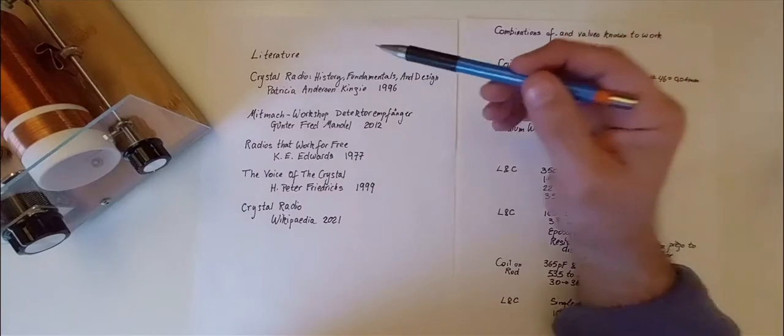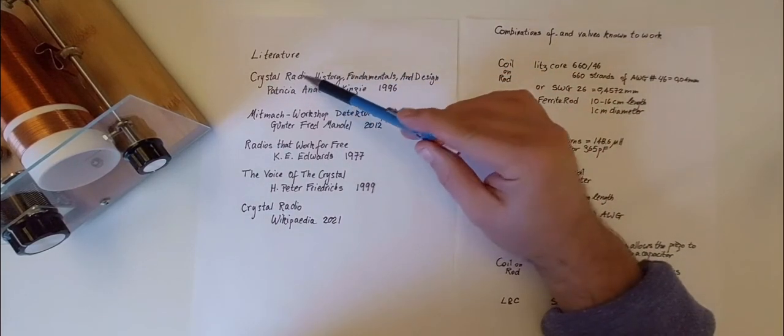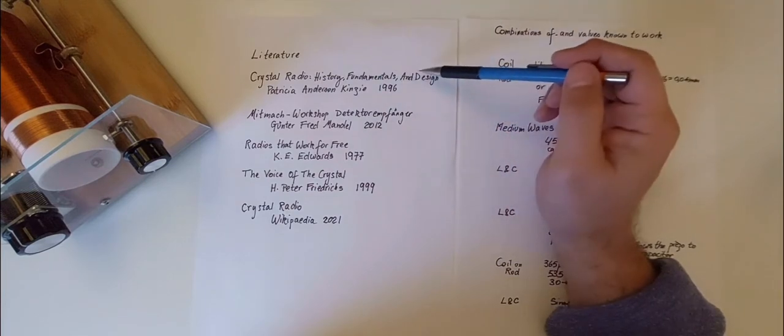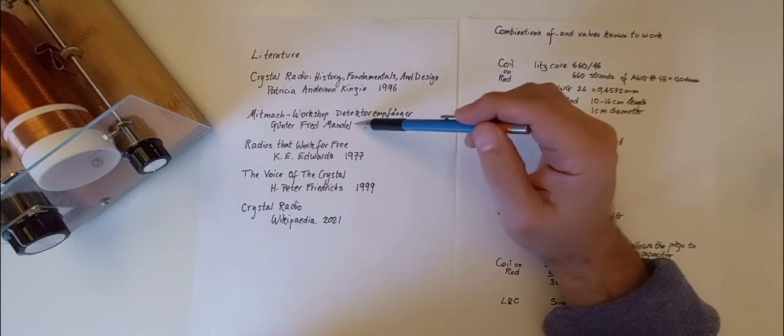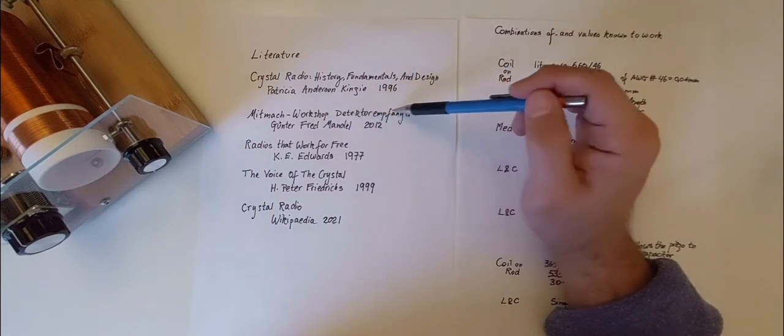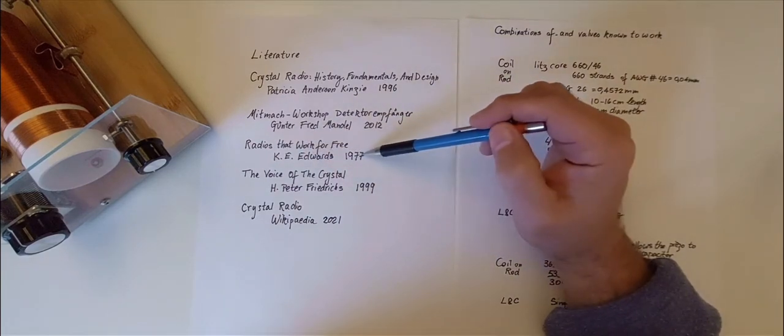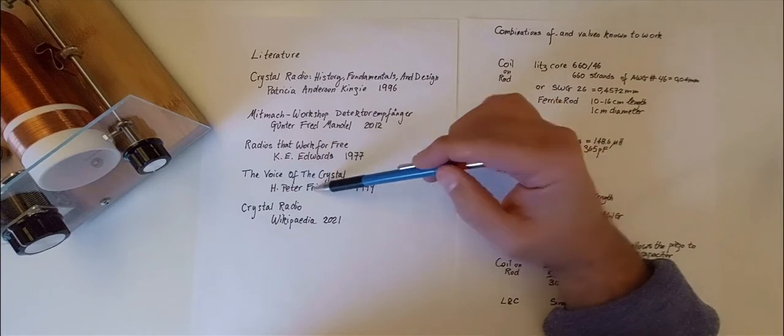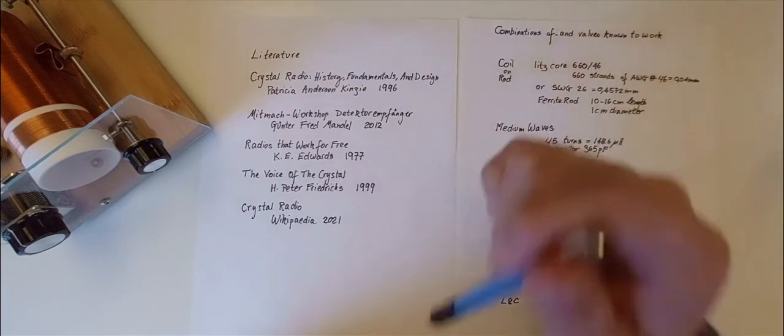Here just a short list of books and other sources of information: Crystal Radio History, Fundamentals, and Design by Anderson Kinsey, 1996; a workshop in German by Mandel, 2012; Detektor Mfenga, a book; Radio That Works for Free by Edwards, 1977; The Voice of the Crystal by Friedrichs, 1999, and other sources of information.